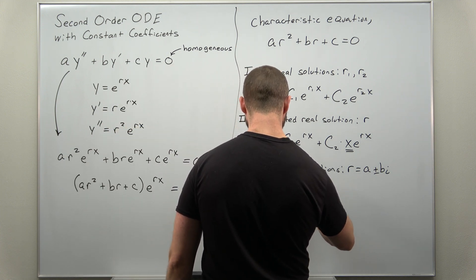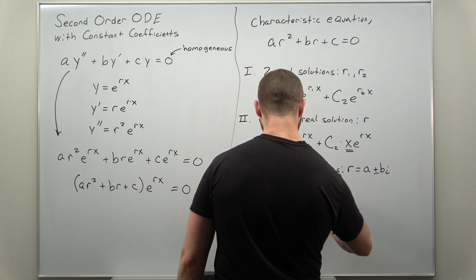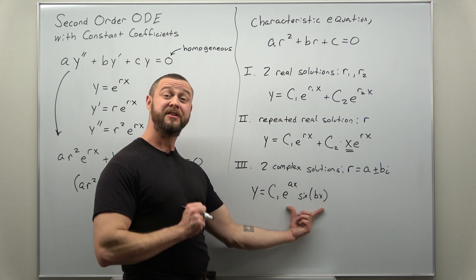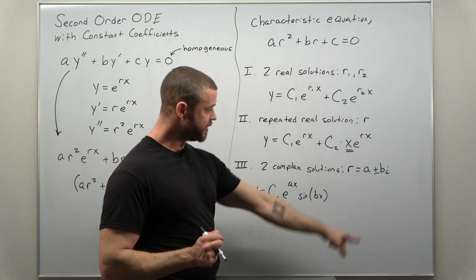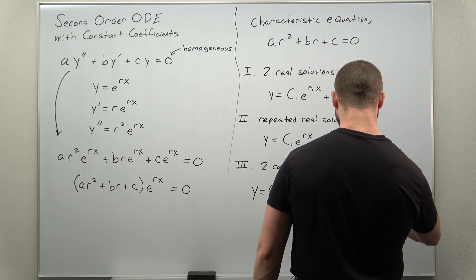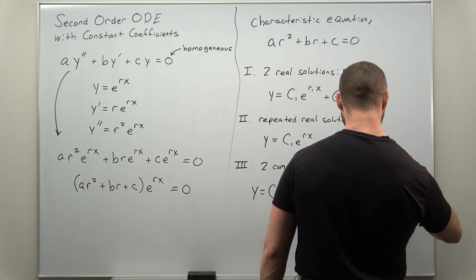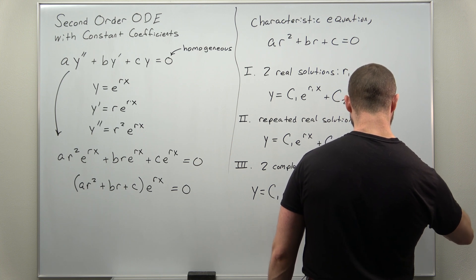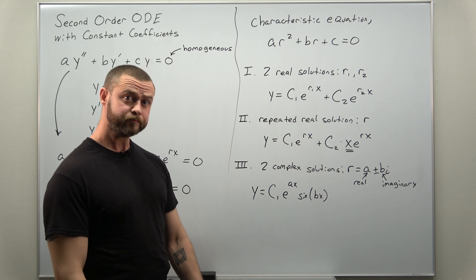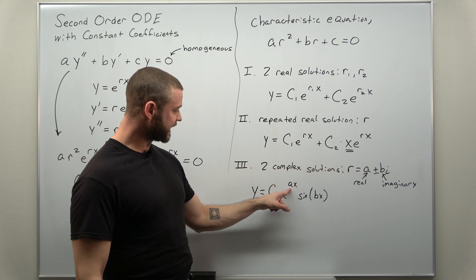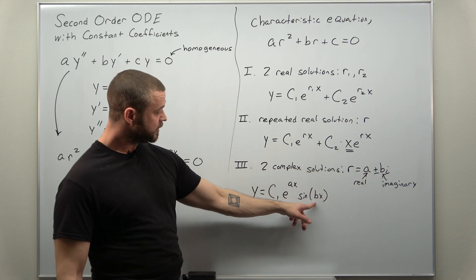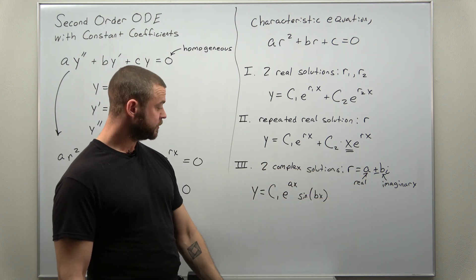And you get a combination of exponential functions multiplied by trig functions. So here a, we might call that the real part, and b sometimes called the imaginary part. So we're going to plug in the real part to the exponential term and then the imaginary part to the trig term.